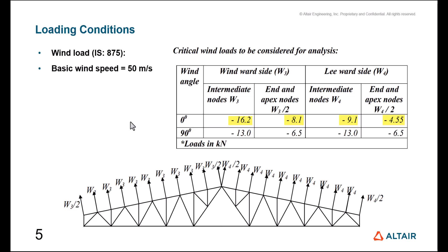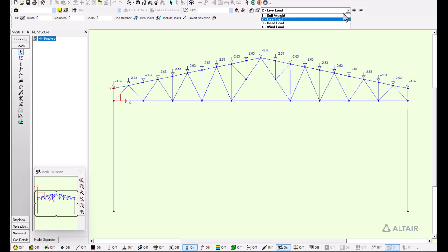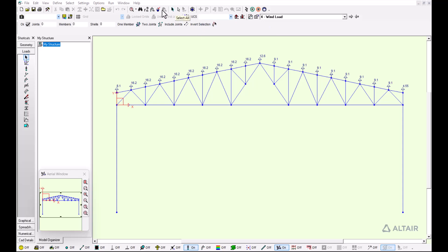We also have that represented here as a wind load, as you can see: 16.2 on the left side, 8.1 on the end node. The wind loads are going upwards just as in the diagram. The same goes for the right side and end node, and here in the middle joint we have the sum of 8.1 plus 4.55 that gives us a total of 12.6 kilonewtons.